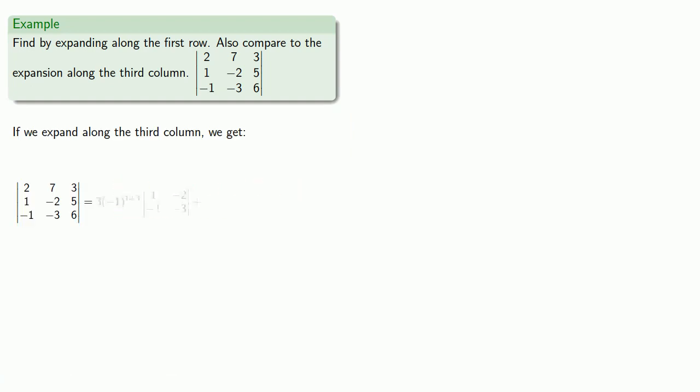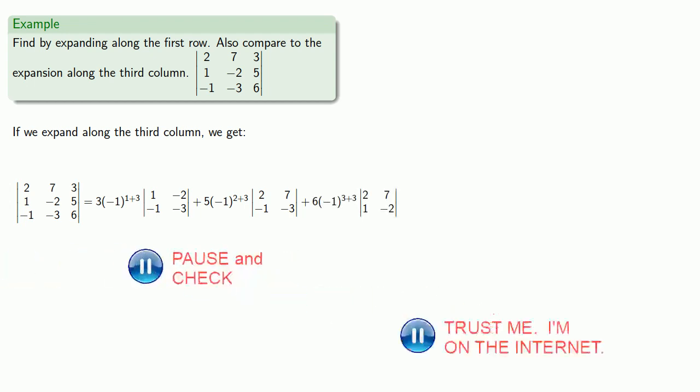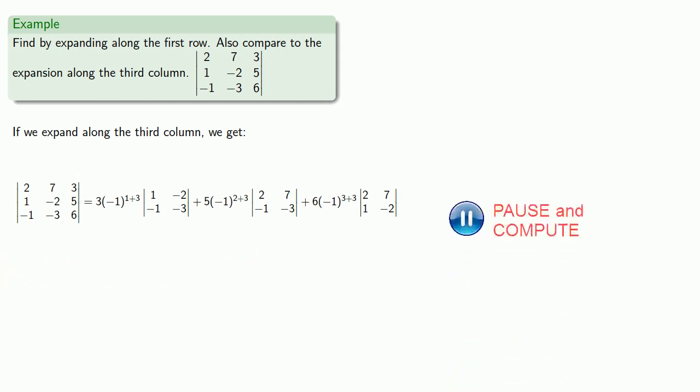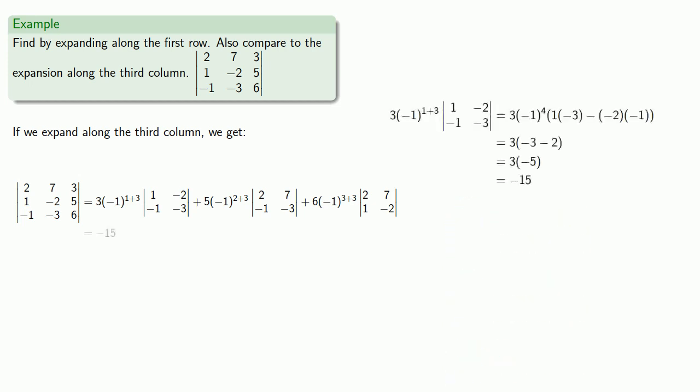We'll have 3 times negative 1 to power 1 plus 3 times the minor, plus 5 times negative 1 to power 2 plus 3 times the minor, plus 6 times negative 1 to power 3 plus 3 times the minor. And we'll find those determinants. And when we add everything together, we get a determinant of negative 86.